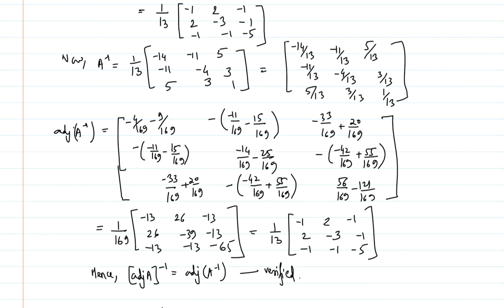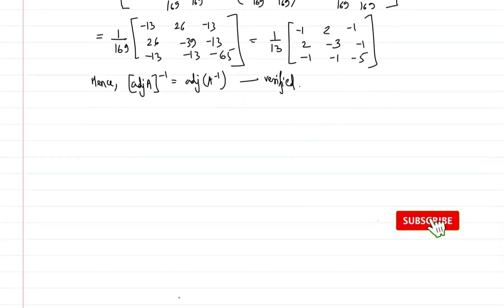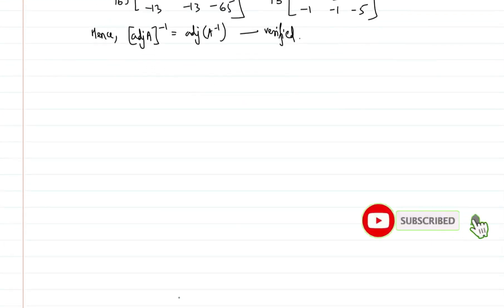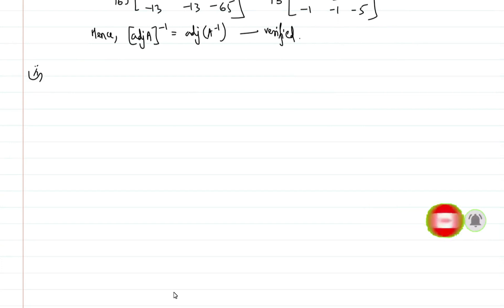This completes the first part. In the second part we need to show that the inverse of A inverse is going to be A. Let us turn to the second part. We have A inverse equal to 1 by 13 times the matrix.